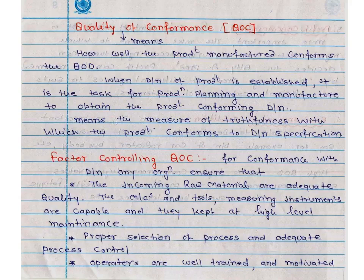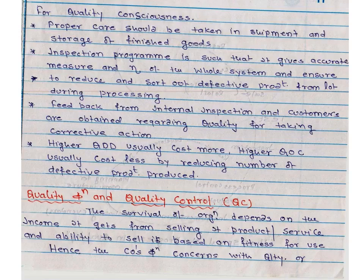The proper selection of process and adequate process control. For manufacturing a product, we should select the suited operation sequence, the appropriate machine tools, and primarily we also select the proper operators. The operators are well trained and motivated for quality consciousness, so that whenever they are performing a particular operation, they know what type of quality is to be incorporated in a product.